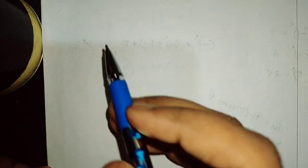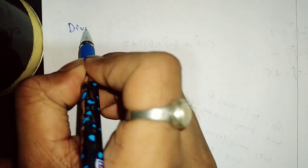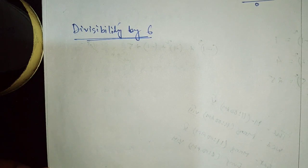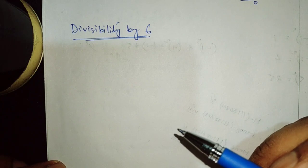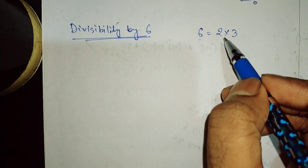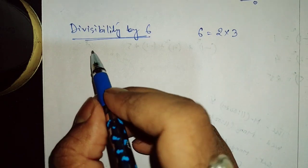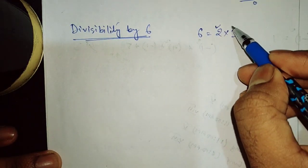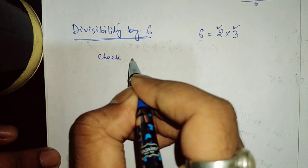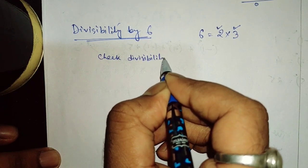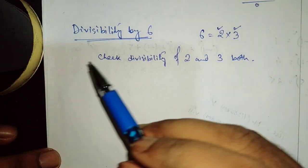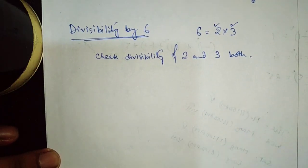Next, we will discuss divisibility by 6. In order to check whether a number is divisible by 6 or not, we know that 6 is the product of 2 and 3. Since 6 is the product of 2 and 3, for a given number we have to check whether it is divisible by both 2 and 3. The rule is: check divisibility by 2 and 3 both. If both are satisfied — if the number is divisible by both 2 and 3 — then that number is divisible by 6. There is no additional rule.